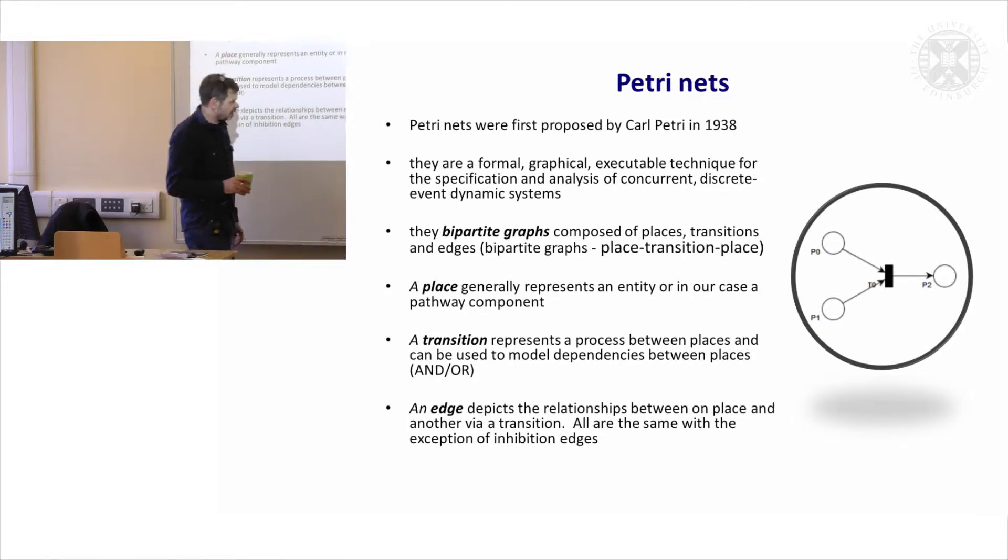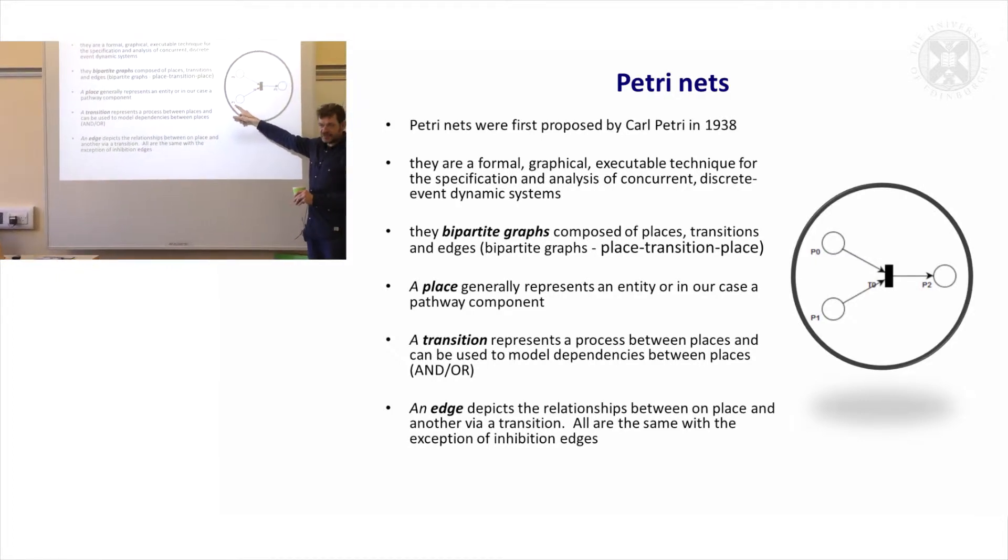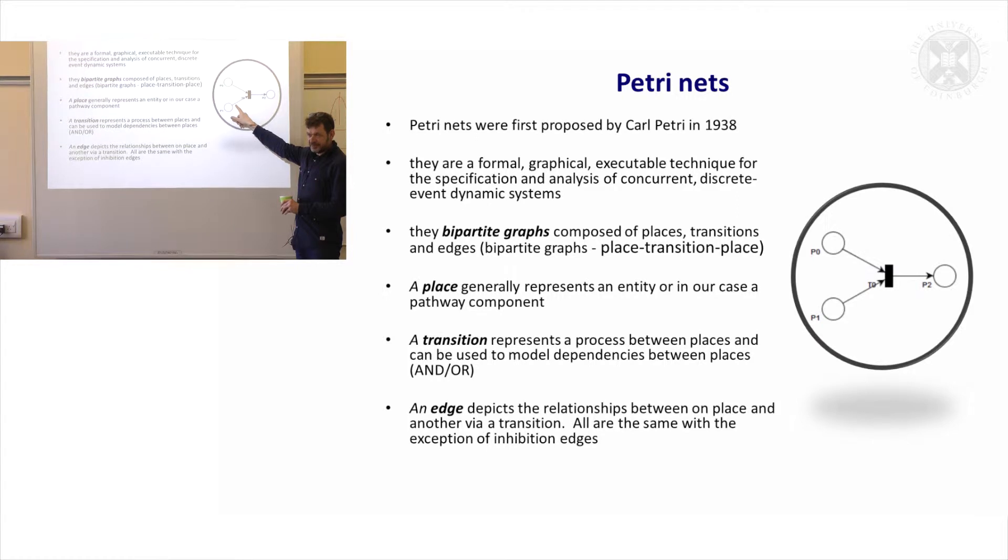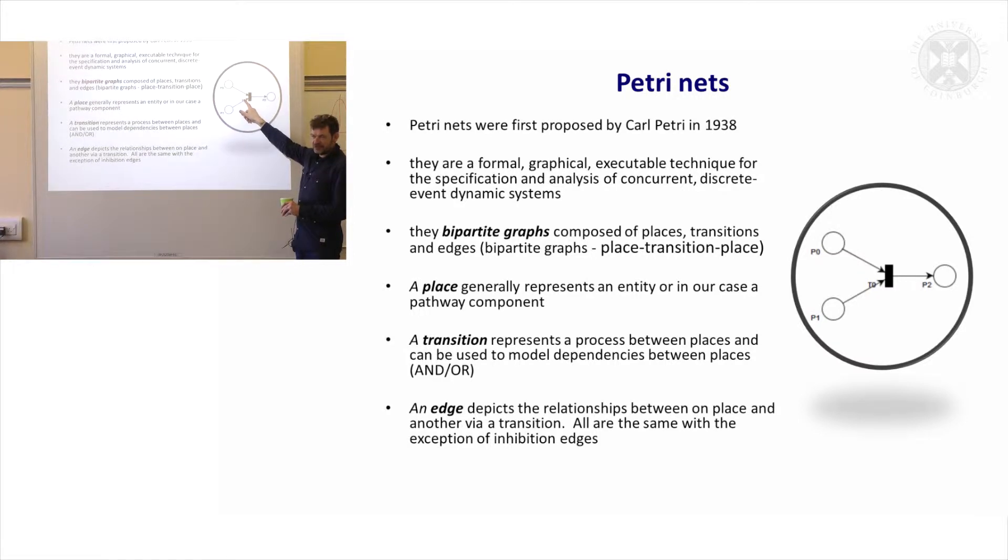Generally what we have in Petri nets is this idea of places, which are generally drawn as a round circle, and transitions. If you remember back to our notation system, we defined places as components—proteins, genes, things which are physical entities. And we defined transitions, or all our processes were called transitions.